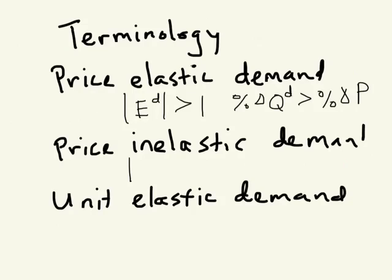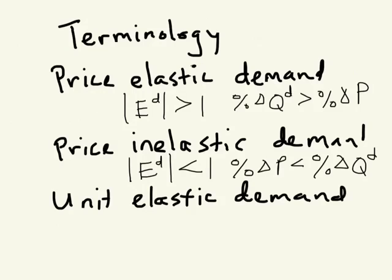Price inelastic demand, the way we said it, the absolute value of the elasticity is less than 1, and that simply means that the percent change in price is going to be less than the percent change in quantity demanded. So a 1% increase in price is going to lead to a less than 1% fall in quantity demanded. That's all that this term is saying.